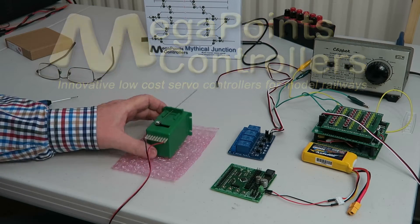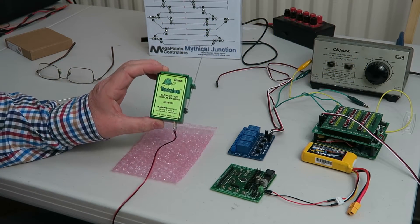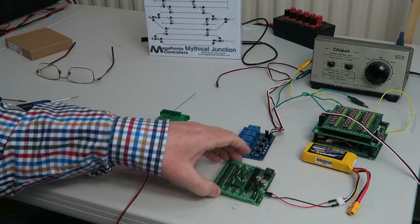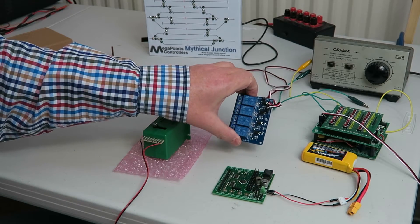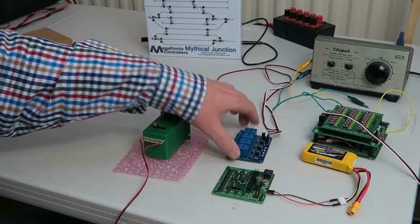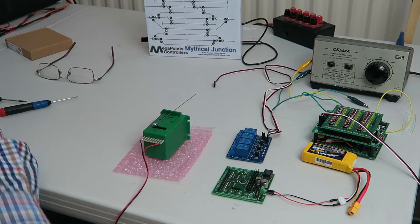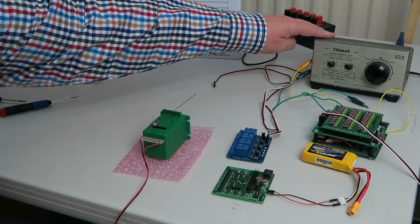Today I'm going to show you how to control a Tortoise switch machine using a Megapoints servo controller and the relay board attachment for it. In addition to this you'll need an AC power source.